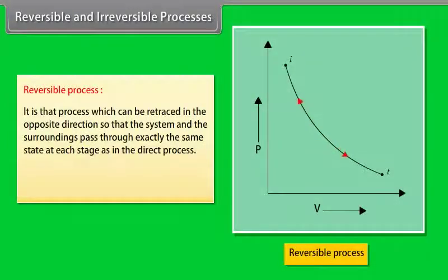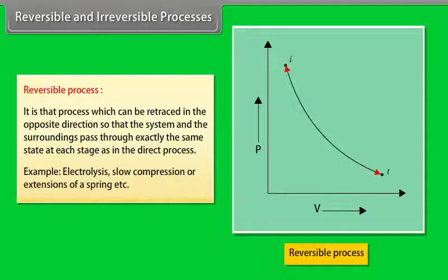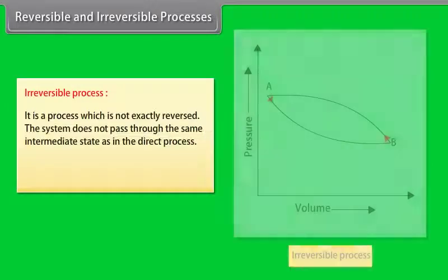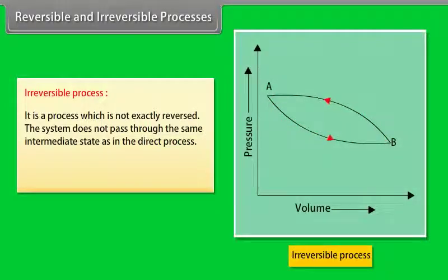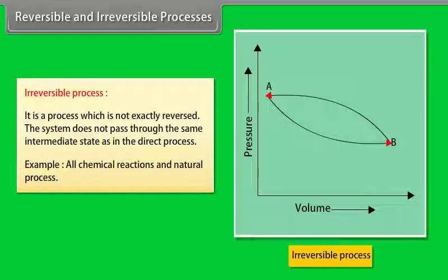Reversible and irreversible processes. Reversible process: a process which can be retraced in the opposite direction so that the system and surroundings pass through exactly the same states at each stage as in the direct process. Electrolysis and slow compression or extension of a spring are examples of reversible processes. Irreversible process: a process which cannot be exactly reversed; the system does not pass through the same intermediate states. All chemical reactions and natural processes are examples of irreversible processes.